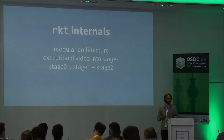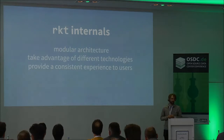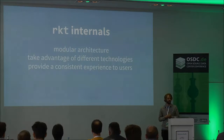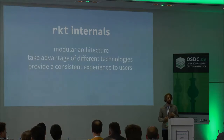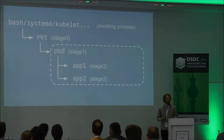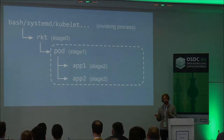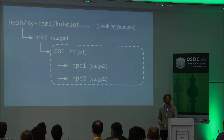Rocket's execution is divided into three different stages: stage 0, stage 1, and stage 2. Stage 1 is swappable, because we think different container technologies are still rapidly evolving and new containment technologies will emerge that we can take advantage of — we want to be able to swap them into Rocket while keeping the same user experience. The fundamental execution unit is always a pod. Stage 0 is the command line interface to end users and always stays the same, defining what users can expect. The pod is the stage 1 execution environment — what you think of as your container. Within the pod run the actual applications you develop.